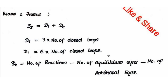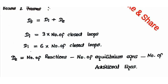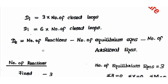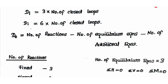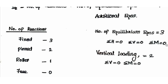The full formula for static indeterminacy = internal static indeterminacy plus external static indeterminacy. For internal: plane structures = 3, space structures = 6. Number of reactions: fixed = 3, pin = 2, roller = 1, free end = 0. Number of equilibrium equations: plane structures = 3, space structures = 6. Equilibrium conditions are: horizontal forces = 0, vertical forces = 0, moment = 0.